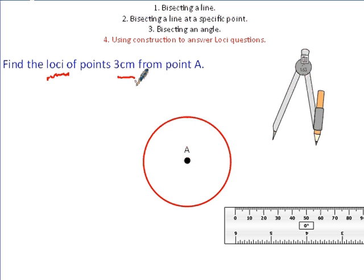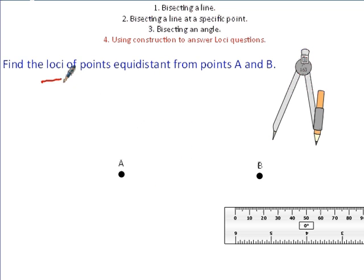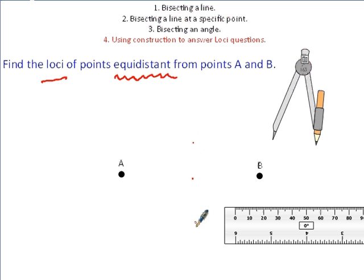Another loci question: find the loci of points equidistant from points A and B. Equidistant means they need to be an equal distance from both A and B. Some points are closer to B than A, some closer to A than B — we need to find the straight line where they are equal. We know how to bisect a line in half, so all we need to do is grab our compass and do exactly what we did earlier.